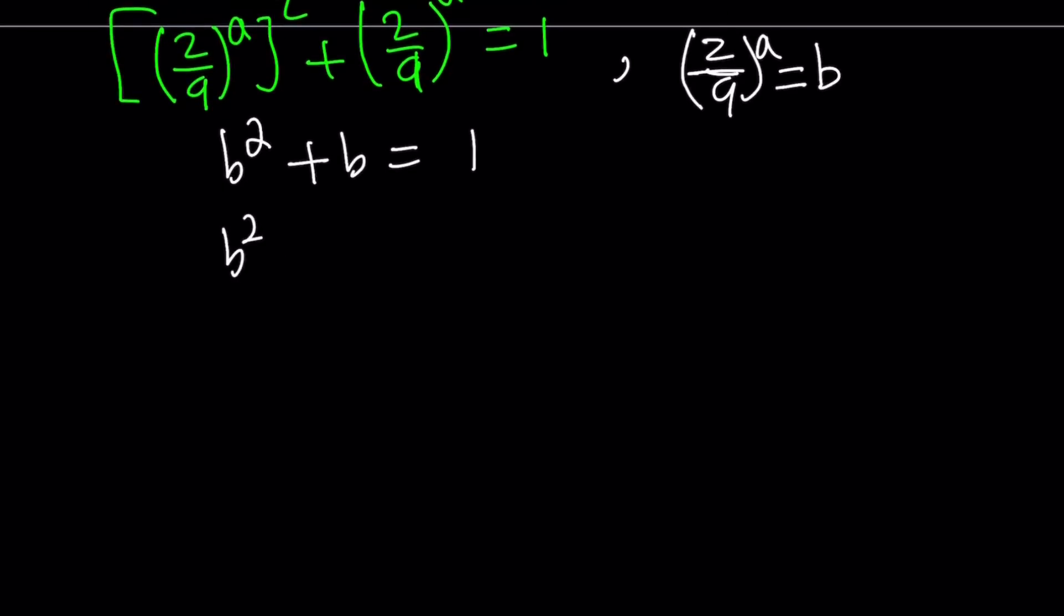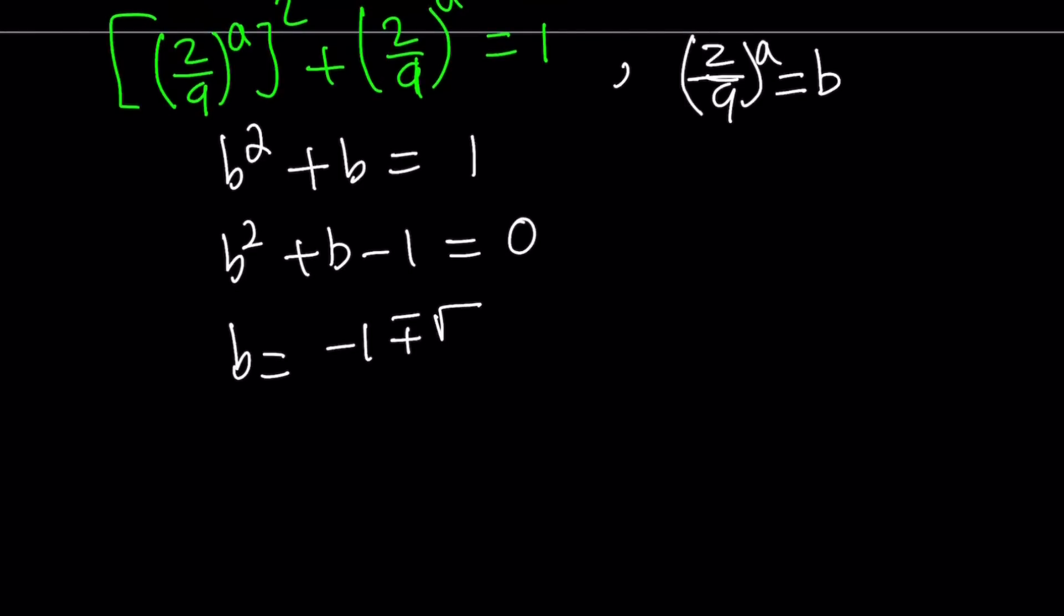A lot of interesting properties. Anyways, if you solve this using the quadratic formula, we're going to get two solutions. It's negative b plus minus the square root of b squared, which is 1, minus 4ac, which is square root of 5, over 2. And from here we can split it up. b1 is equal to negative 1 plus square root of 5 over 2, and b2 is negative 1 minus square root of 5 over 2.